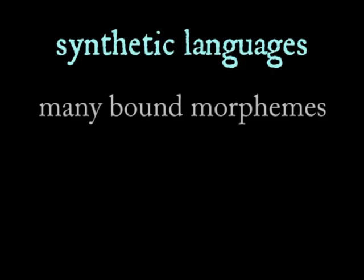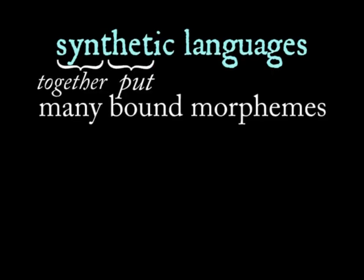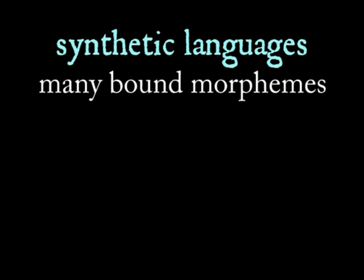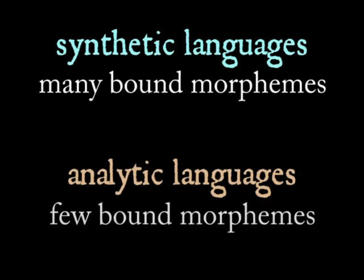Languages that tend to use bound morphemes are known as synthetic languages, because they tend to put morphemes together to form words. At the other end of the spectrum, an analytic language does not use bound morphemes, so each word on average in an analytic language is a free morpheme.